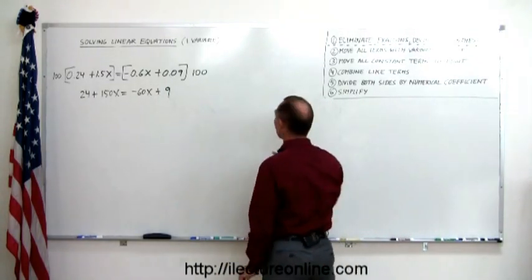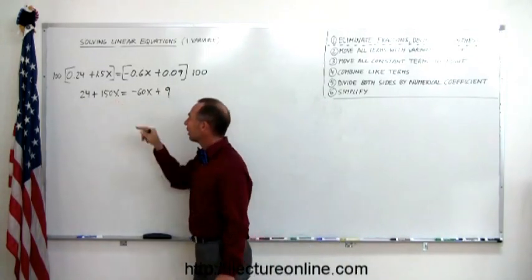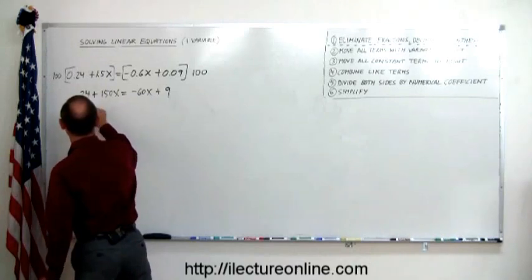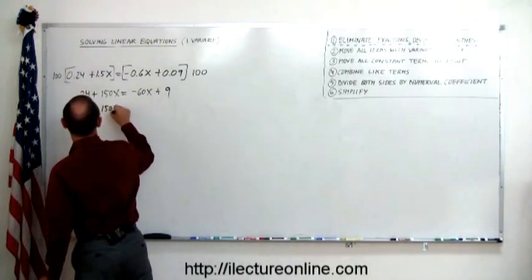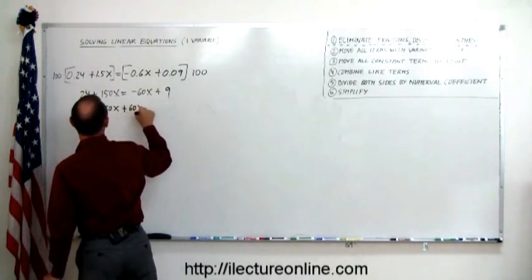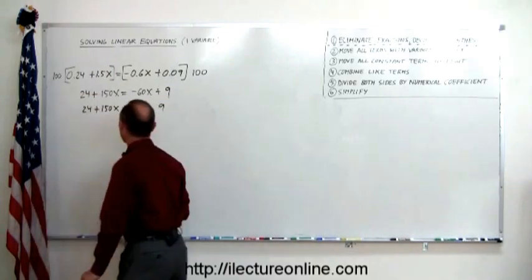Move all the terms with the variable to the left, so the minus 60 goes to the left, becomes a plus 60, so 24, plus 150x, plus 60x, equals the 9 stays behind on the right side.